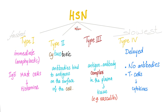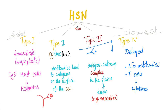Type 1 in a few words: immediate, anaphylactic, IgE, mast cells — they degranulate, releasing histamine, which gives you the symptoms of anaphylactic shock. Type 2 is cytotoxic — antibodies are bound to antigens on the surface of the cell. Type 3 also has antigen-antibody complexes, but the big difference is this happens in the blood. These complexes deposit in blood vessels causing vasculitis, in joints causing arthritis, in the kidney causing nephritis, and so on.